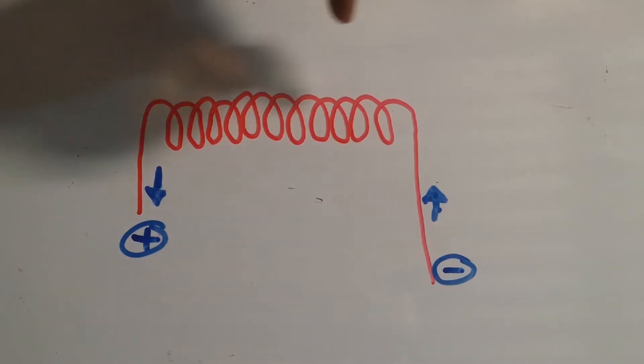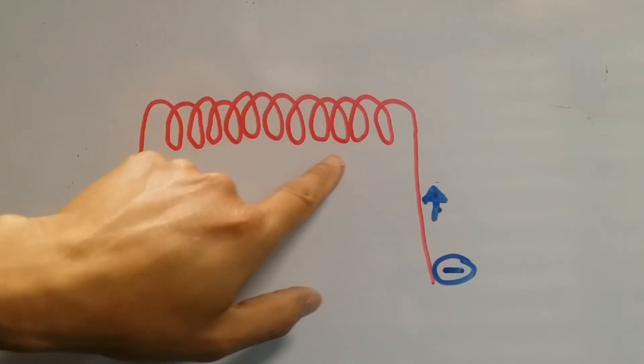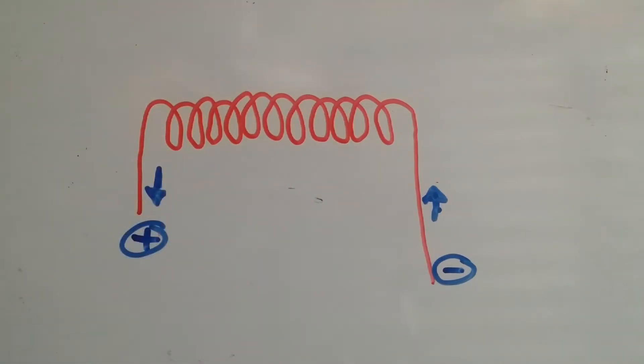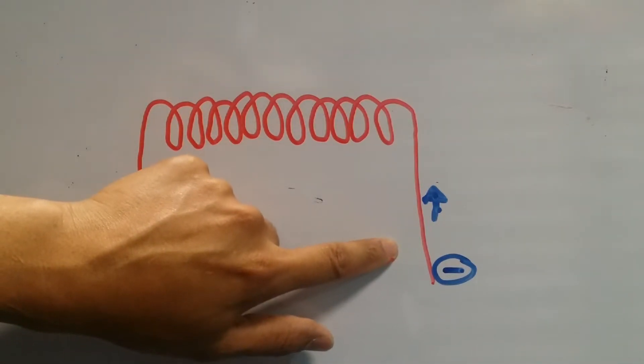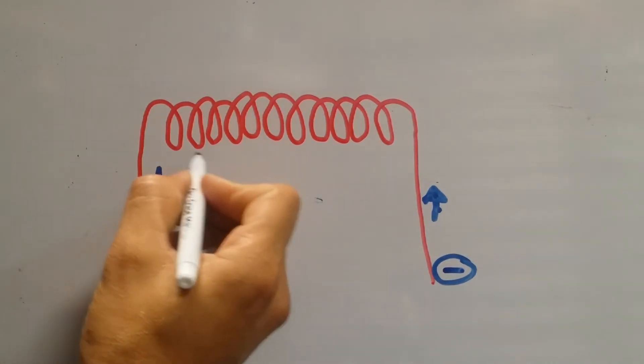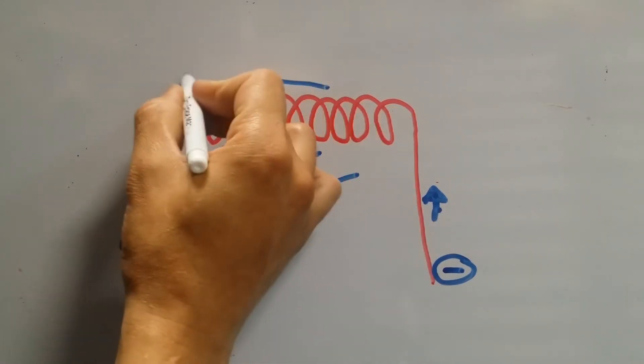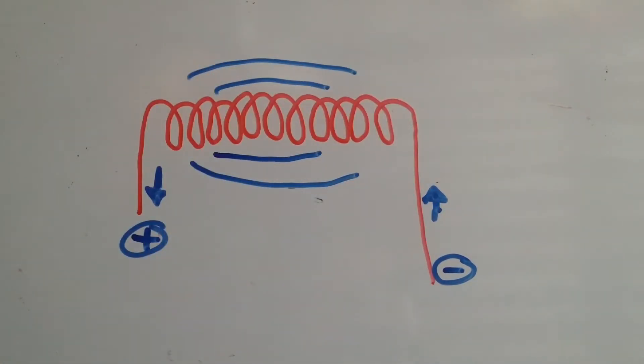If you take the same piece of wire and now you coil it, like I did over here, and you put electrons—electrons flow from negative to positive, as we saw earlier—as soon as electrons start flowing, a magnetic field starts building up. And quickly, we have what is called an electromagnet.